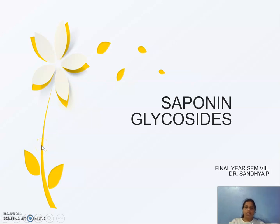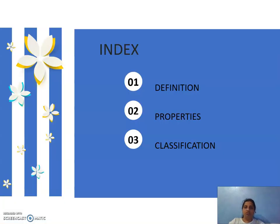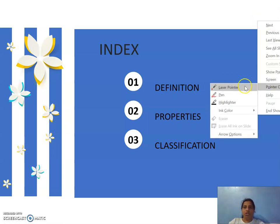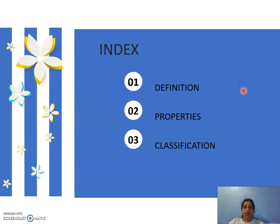Very good morning students. I welcome you to final year and to our first class of pharmacognosy, which is on saponin glycosides. Saponin glycosides is a chapter we dealt with in the first year, and what I am going to do is first revise with you all and then go ahead with the next aspect. We will see the definition, the properties, the chemical test, and finally the classification.